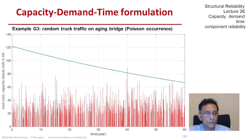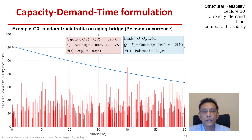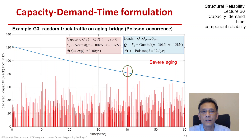The red vertical lines are the randomly occurring loads. These loads occur according to a Poisson process with rate 12 per year, which is why you see so many of them. The heights of those red lines are Gumbel distributed with a mean of 30 kN. In this particular realization, we have clearly one failure occurring somewhere around 40 years of age.